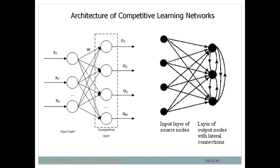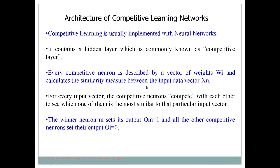Here is another representation of the competitive learning network. The output section is called the competitive layer, where the set of nodes compete with each other. Competitive learning is implemented with the help of a neural network. In a multilayer perceptron there is an input layer, hidden layer, and output layer, and this hidden layer is commonly known as the competitive layer.